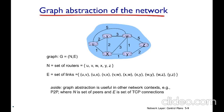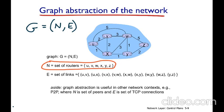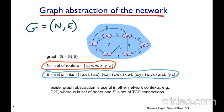How can we represent a network to work with routing protocols? A network is represented by a graph G composed of a set of nodes N and a set of links E. N is the set of routers — U, V, W, X, Y, and Z — and E is the set of links. For example, the link U-V has a cost of 2. This is the representation we are going to use when talking about routing protocols.